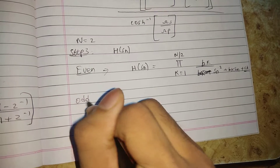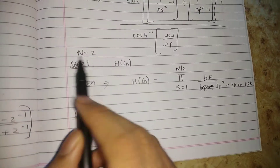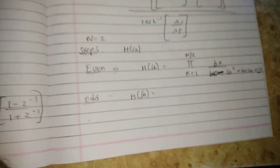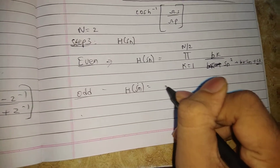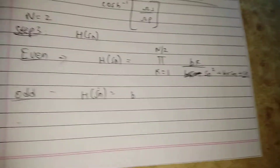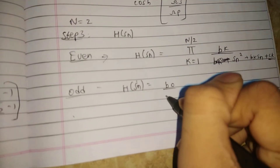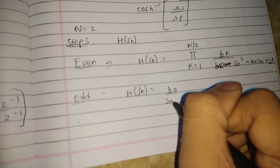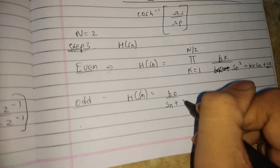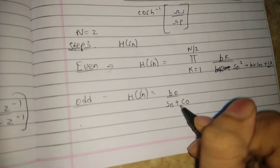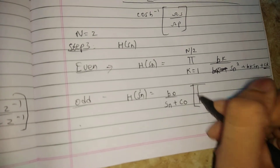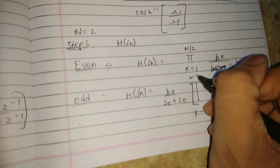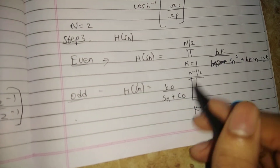If n is odd, for example n equals 3, then H(sn) equals (b_0 / (s_n + c_0)) multiplied by the product from k=1 to (n−1)/2 of the same second-order terms. The pi symbol here represents the multiplication product.